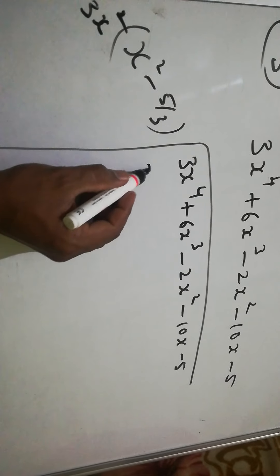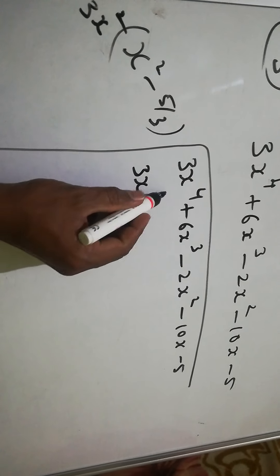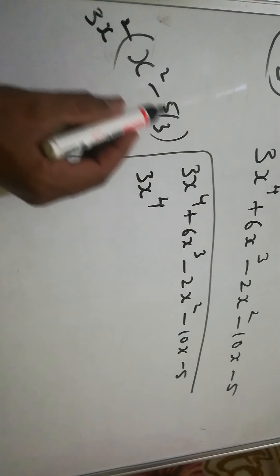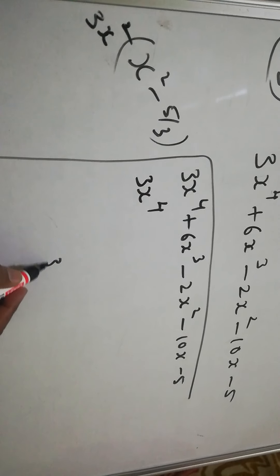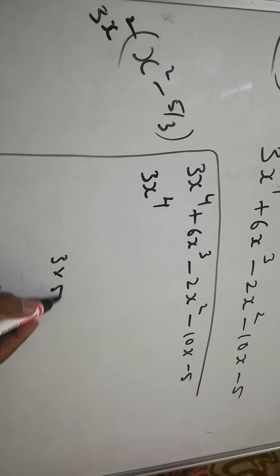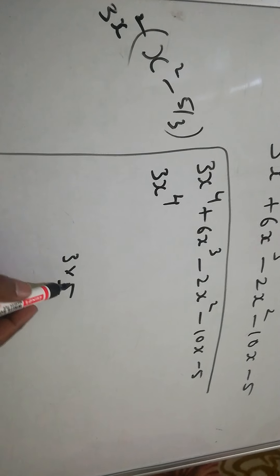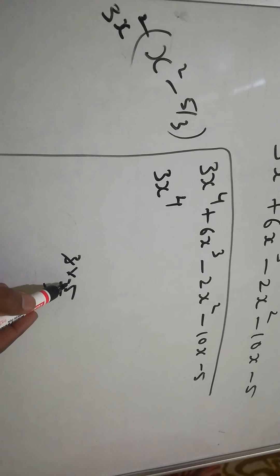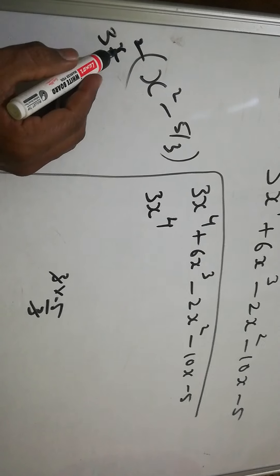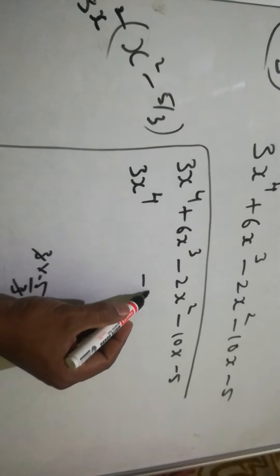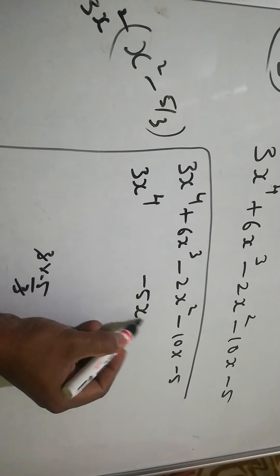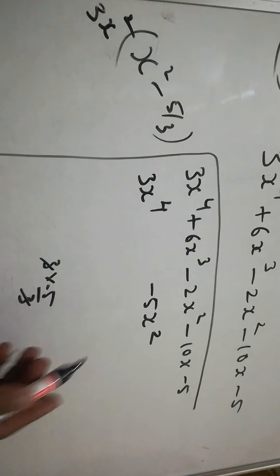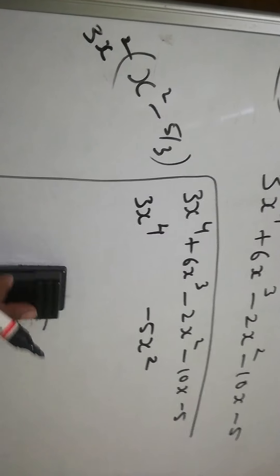Multiplying 3x² by x² gives 3x⁴. Then 3x² times (-5/3): the 3s cancel, giving -5x². So we write -5x² here. The 6x³ term is placed in its correct position.